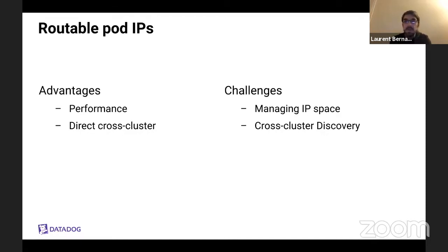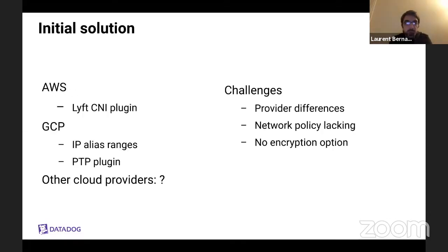These are the good things, but it also comes with a few challenges. The first one is managing the IP space — if every single pod in a large infrastructure has a unique routable IP, you need to be very careful in choosing the network ranges you're using. And if having routable IPs is helpful, you also need to solve cross-cluster service CIDR rewrite. The initial solutions we used was to look for CNI plugins allowing for it. On AWS, we've been using the plugin by Lyft, which does exactly this and has been extremely helpful. On GCP, you can alias IP ranges to network cards, grabbing IPs from these ranges for pods with very simple routing. Of course, as we moved to other cloud providers, we would have needed to find new solutions for them.